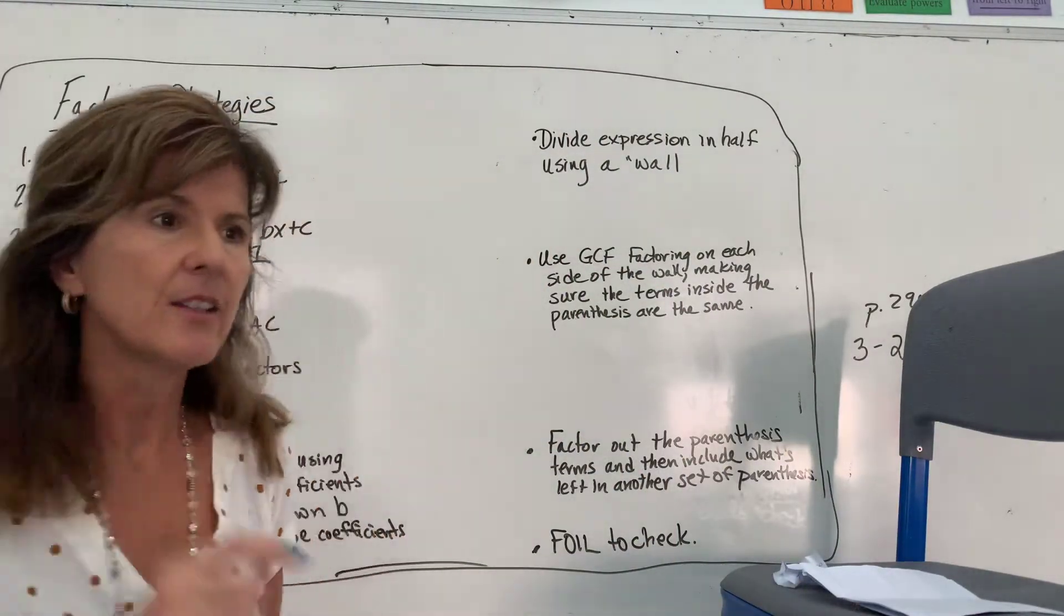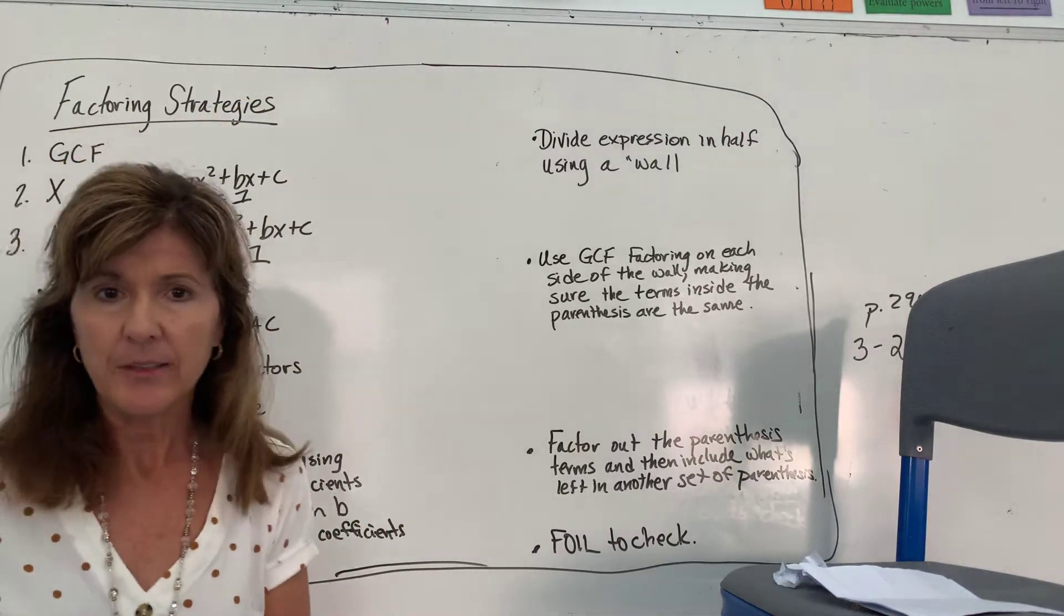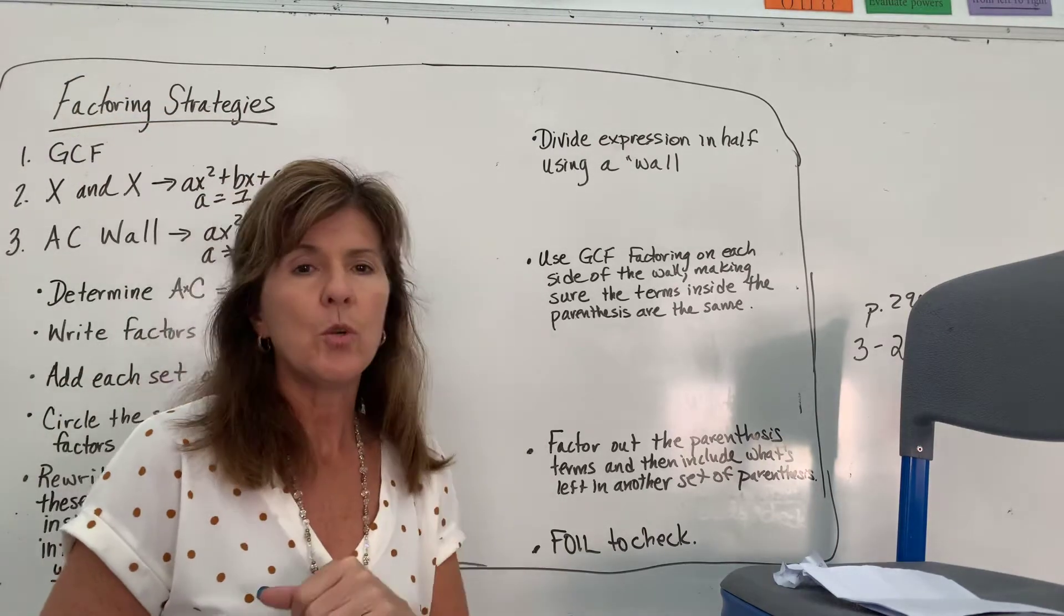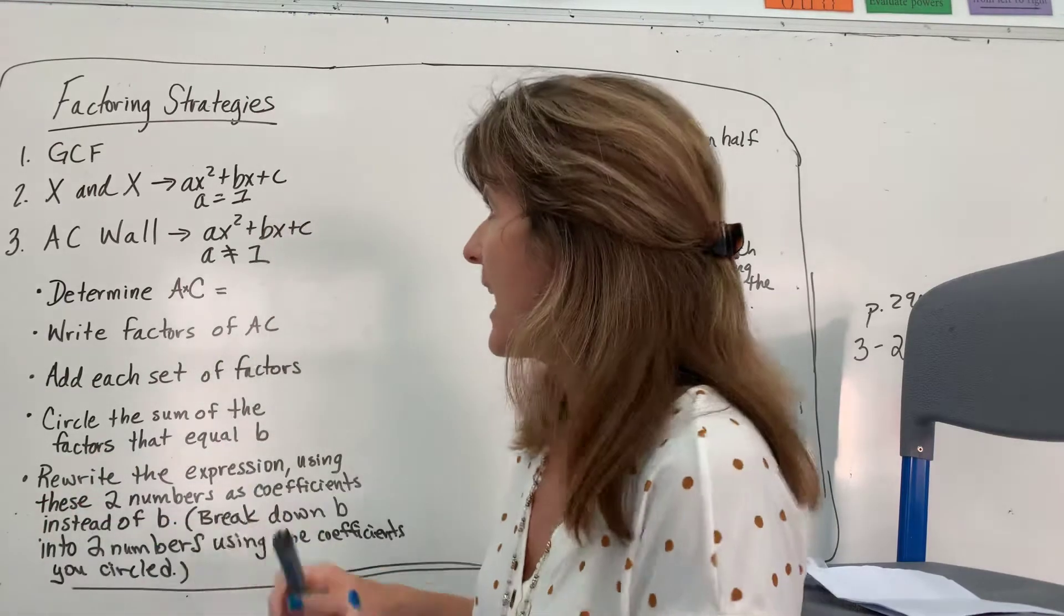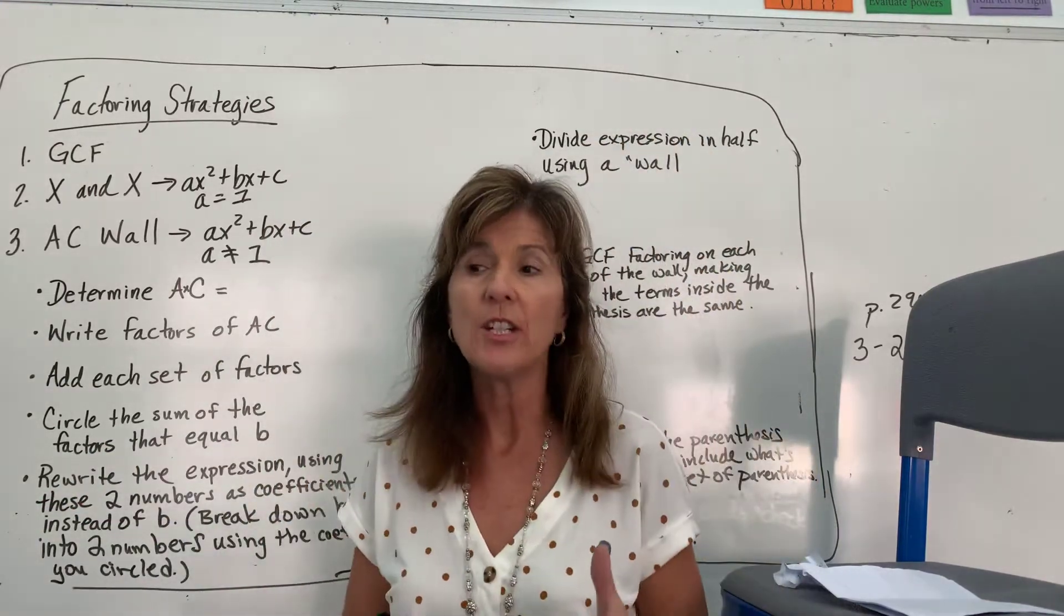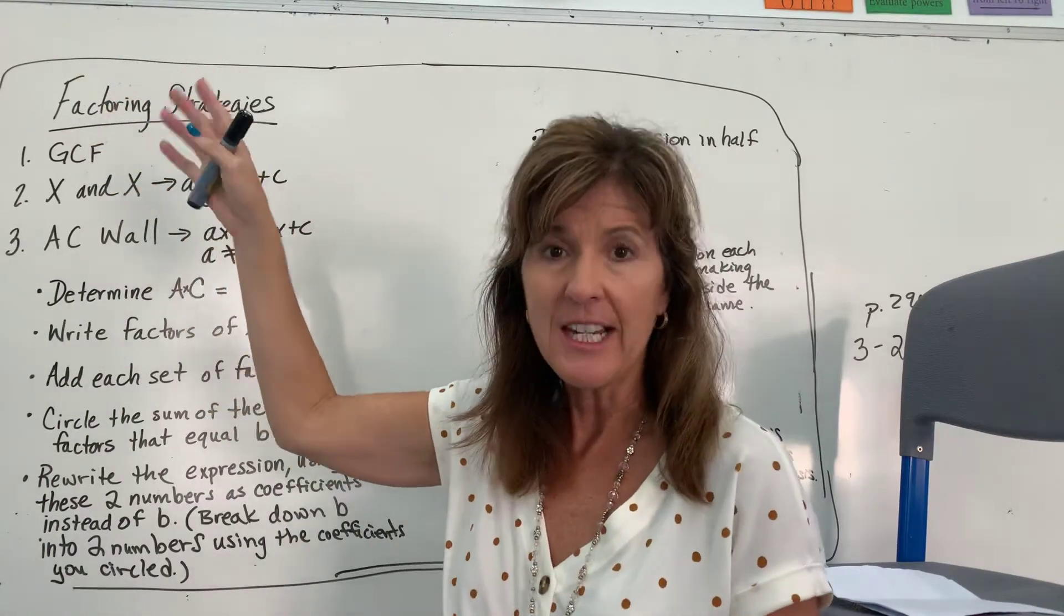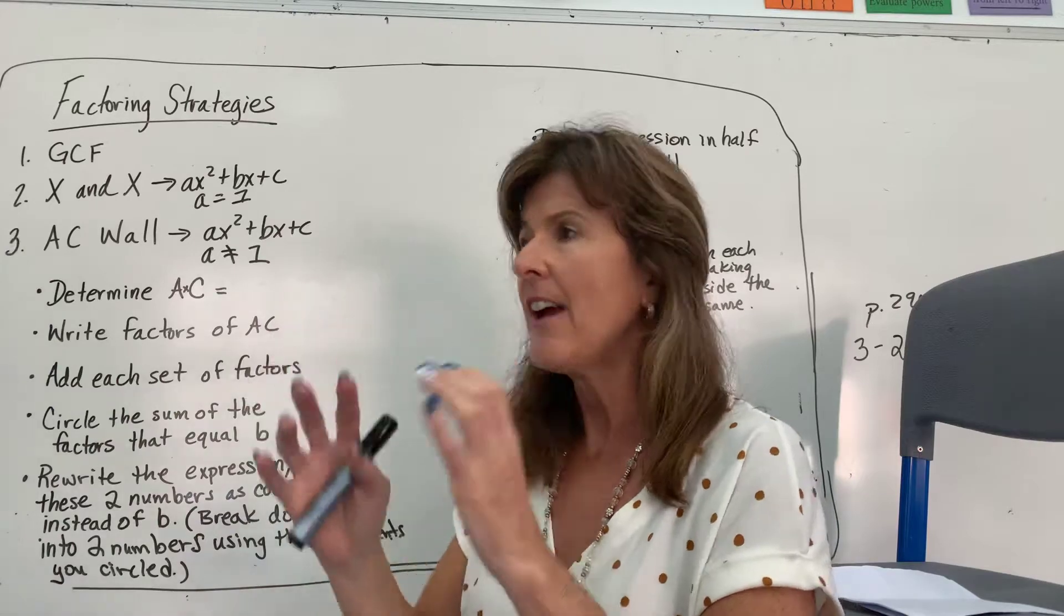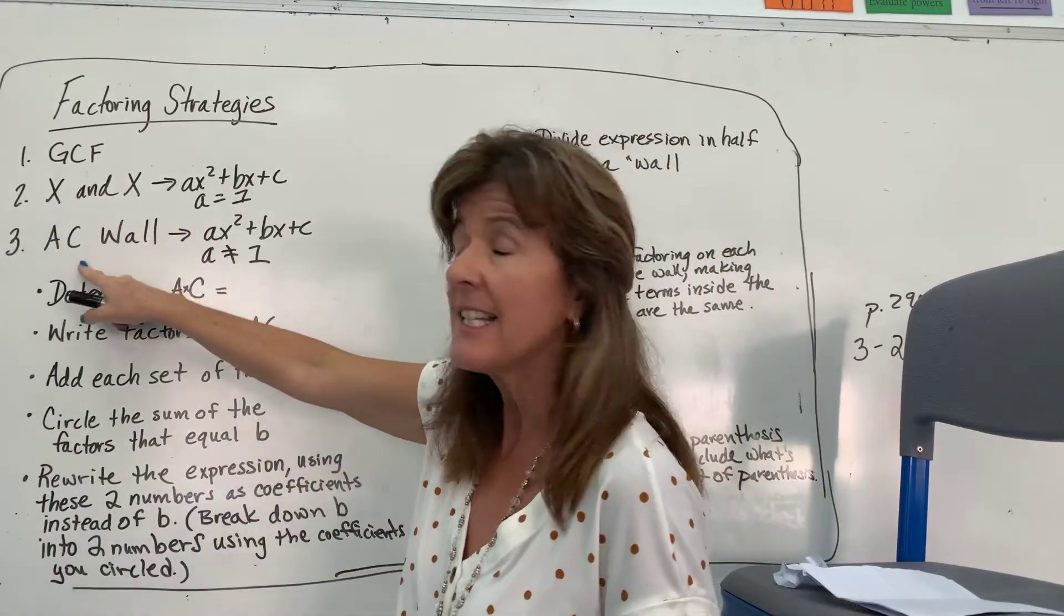Okay. Hopefully, you're able to do all that. Today, we're doing AC Wall. And remember the difference. How you determine which strategy you use is you always, always, always check for GCF. If there's a greatest common factor, do that. And then after that, if there's not, you can look between X and X and AC Wall.